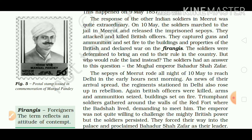The answer was the Mughal emperor Bahadur Shah Zafar. The sepoys of Meerut rode all night of 10th May to reach Delhi in the early hours the next morning. As news of their arrival spread, the regiments stationed in Delhi also rose up in rebellion. Again, British officers were killed, arms and ammunition seized, and buildings set on fire. Triumphant soldiers gathered around the walls of the Red Fort where the Badshah lived, demanding to meet him.